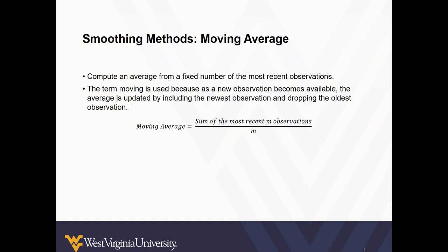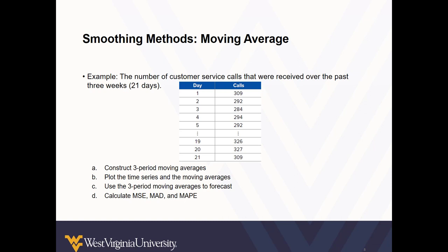The moving average technique is straightforward and very popular. It works by computing an average from a fixed number of the most recent observations. It's called a moving average because as new observations are available or added, the average is updated by including the newest observation and dropping the oldest observation.